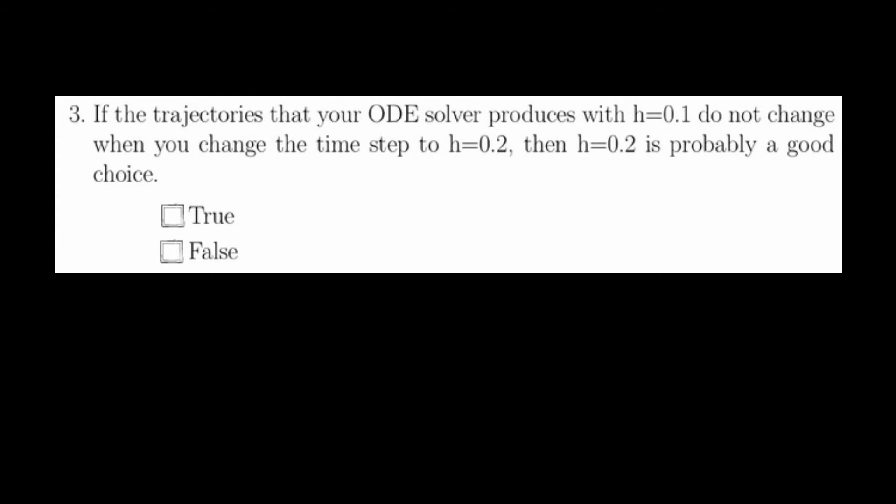Question 3 is almost identical to question 2, but it goes in the other way of adaptation. That is, if you have a step size of 0.1 and then you try a step size of 0.2 and you don't see any change, then a step size of 0.2 is probably a good choice. This is true by the exact same logic as question 2.